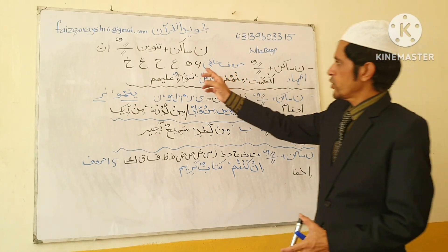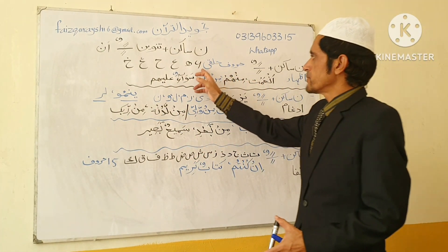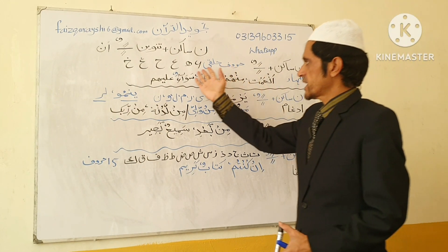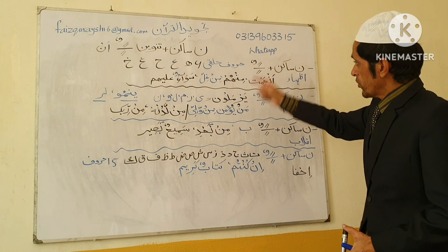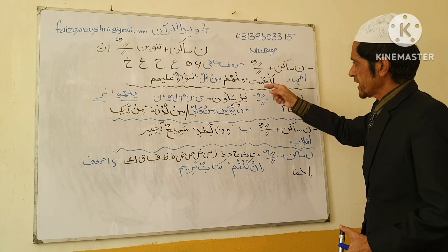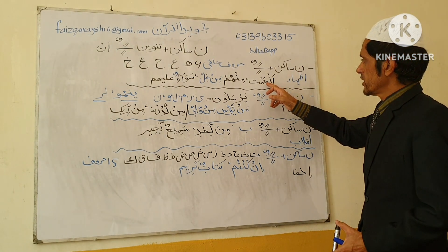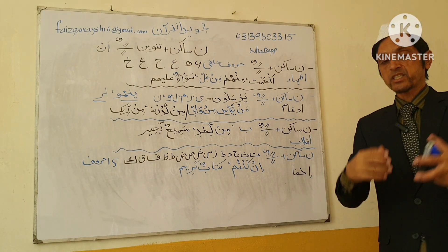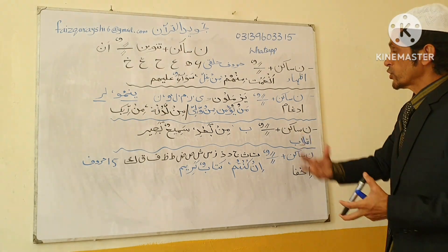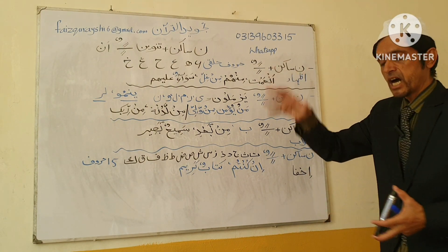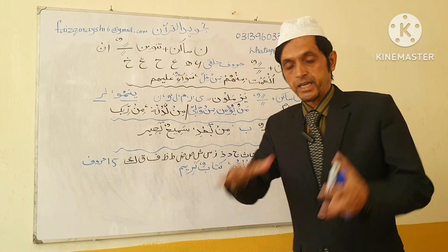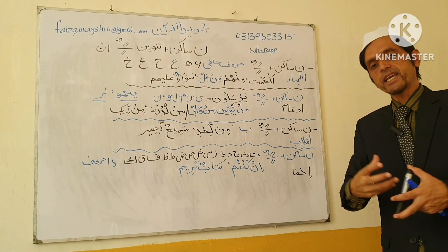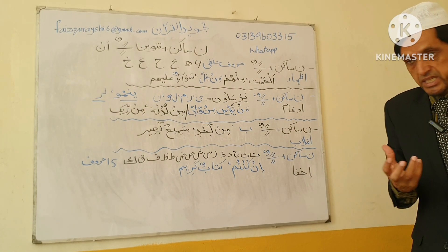Whenever Noon Saakin or Tanween comes before Hurofi Halqi, we express Noon in a very expressive way. For example: 'An-Amta' — Noon Saakin before Ayn (a throat letter), so we say 'An-Amta' clearly. 'Min Hum' — Noon Saakin before Ha (throat letter): 'Min.' 'Min Ghill' — before Ghayn (throat letter): we express the Noon clearly: 'Min Ghill.' Likewise for Tanween before throat letters — we express the Tanween clearly.